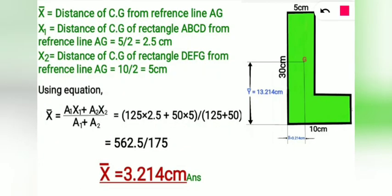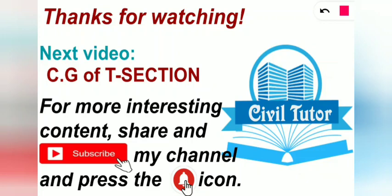After calculating the values of X bar and Y bar, our CG will lie at a distance of 3.214 centimeter from reference line AG and at a distance of 13.214 centimeter from the bottom line. So this was all for today. My next video will be based on CG of T section. For more interesting content, share and subscribe to the channel and press the bell icon.